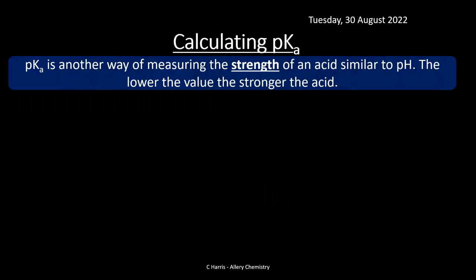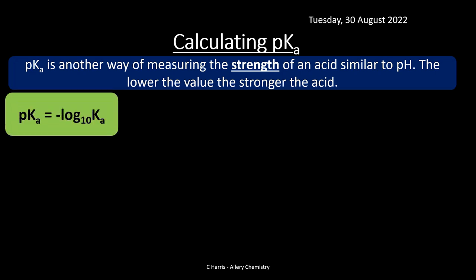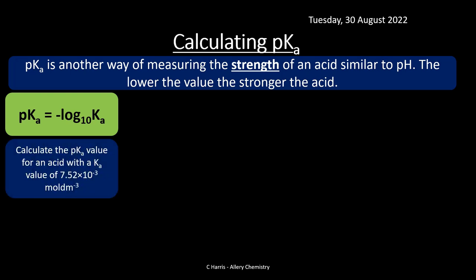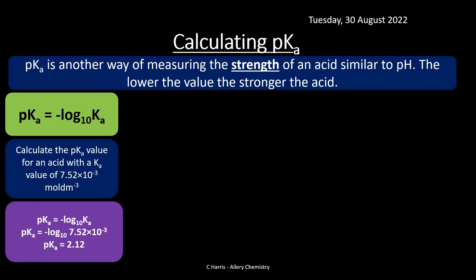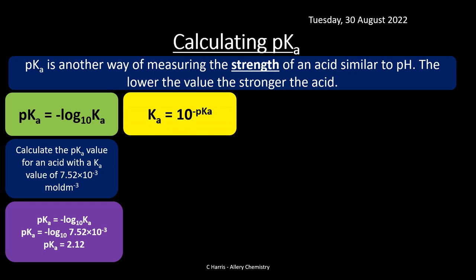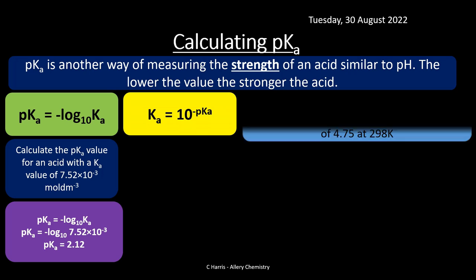pKa is just another way of measuring the strength of an acid, similar to pH. The lower the pKa value, the stronger the acid. pKa = −log(Ka), and to get Ka from pKa: Ka = 10^(−pKa). For example, for an acid with Ka = 7.52 × 10⁻³, pKa = −log(7.52 × 10⁻³) = 2.12. To work out Ka: Ka = 10^(−pKa) — shift then log, then enter minus the pKa value.